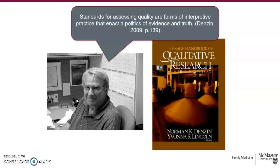This is Norman Denzin — a famous qualitative methodologist and long-time editor of the SAGE Handbooks of Qualitative Research, a great source of foundational knowledge written by key figures in the field. What Dr. Denzin has to say about quality criteria is that the standards for assessing quality are forms of interpretive practice that enact a politics of evidence and truth. I think this is absolutely true and explains some of the controversy in the field, as well as the tension with quantitative research — especially in evidence-based medicine around appraising studies and grade criteria. There is a political nature about what is truth, who can know it, who can produce it, and what it means.